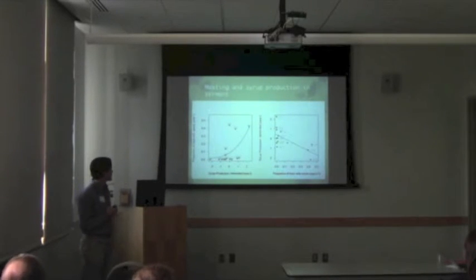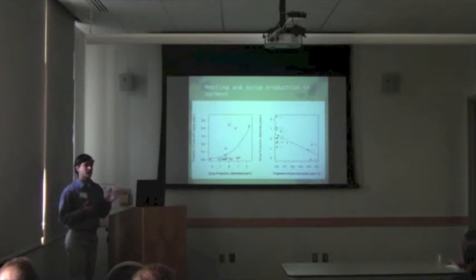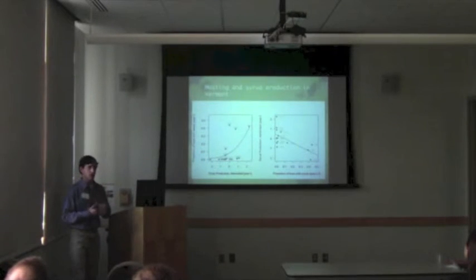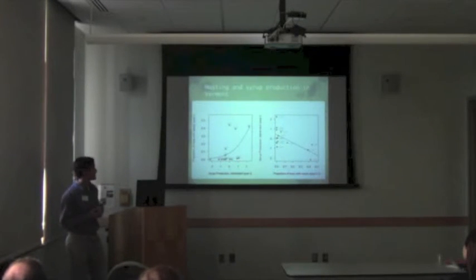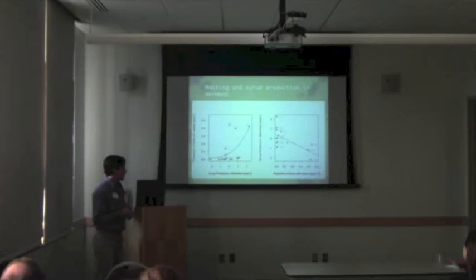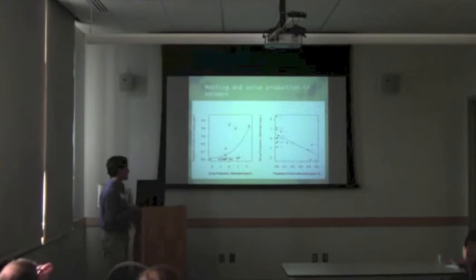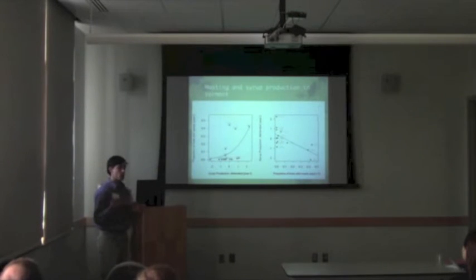What we see is that in the left-hand figure, syrup production is positively related to seed production in the same year — so if there was a high flowering year, it was likely there was high syrup that same spring. The figure on the right shows the proportion of trees with seeds in the previous year and its relation to syrup production, and there we see a negative effect: in the year after a mast year, syrup production declines. So both predictions are supported.